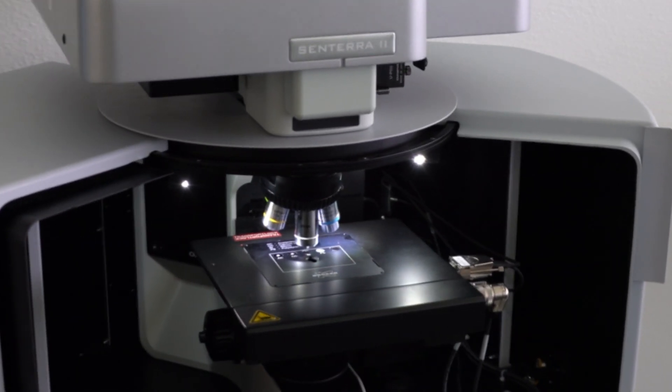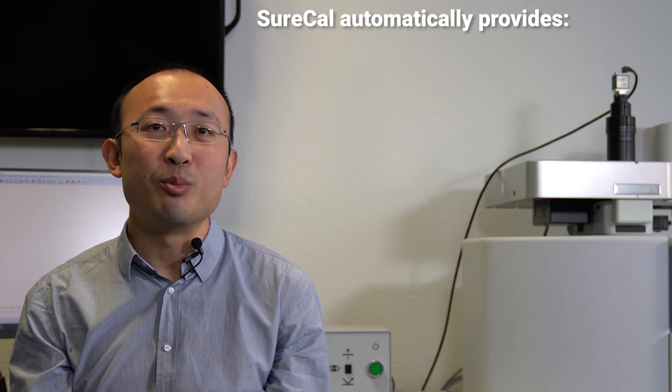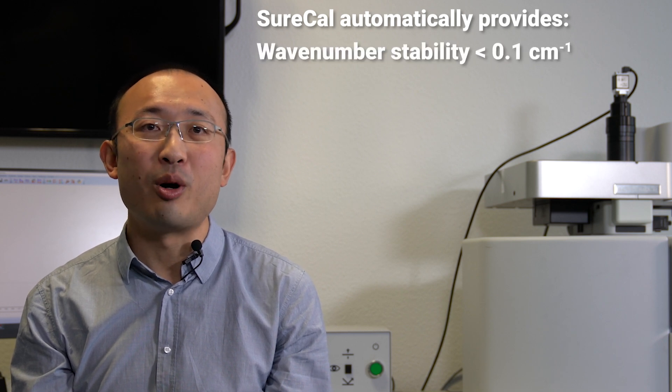Simply put, a Centera 2 must never be manually calibrated. It does it completely automatically with the high wavenumber stability of 0.1 wavenumber.